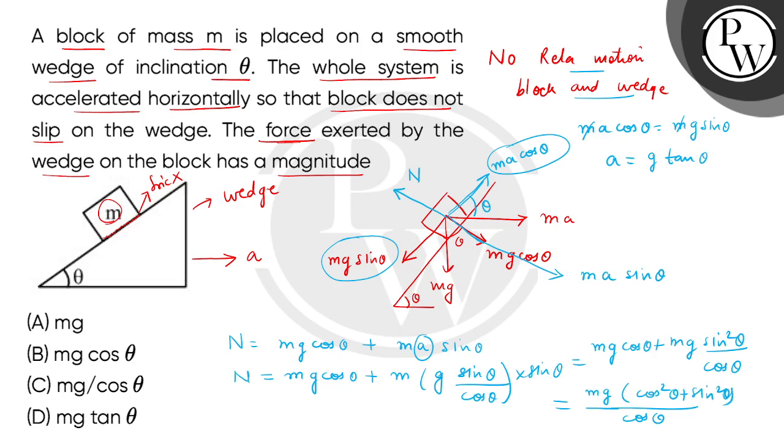This is the first trigonometric identity. What will be the answer? What is the force exerted by the wedge on the block? That is the normal reaction, normal force N. The correct answer will be option C. Thank you.